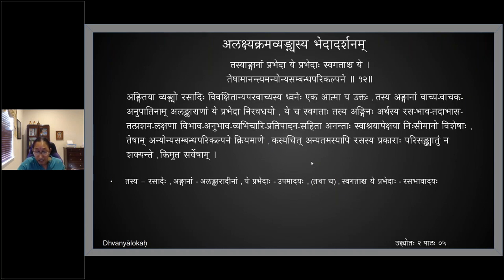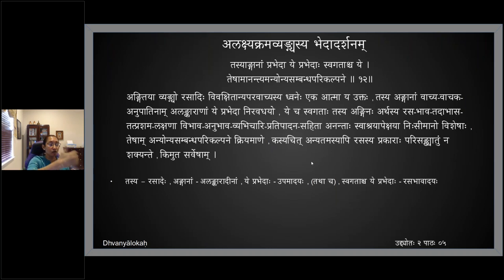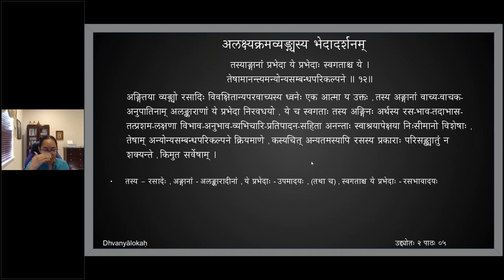Swashraya means alambana vibhava — he is talking about the alambana vibhava which is the nayaka and naika. Naika pravedas are ananta — you can have eight different types of naikas, ashtanayika, or uttama madhyama adhama. In a nayaka you can have daiva nayaka, manushanayaka, daiva-manushanayaka mix. Swashraya apekshaya — with respect to the alambana from which the rasa comes out — that is also nissimanaha, it is boundless.